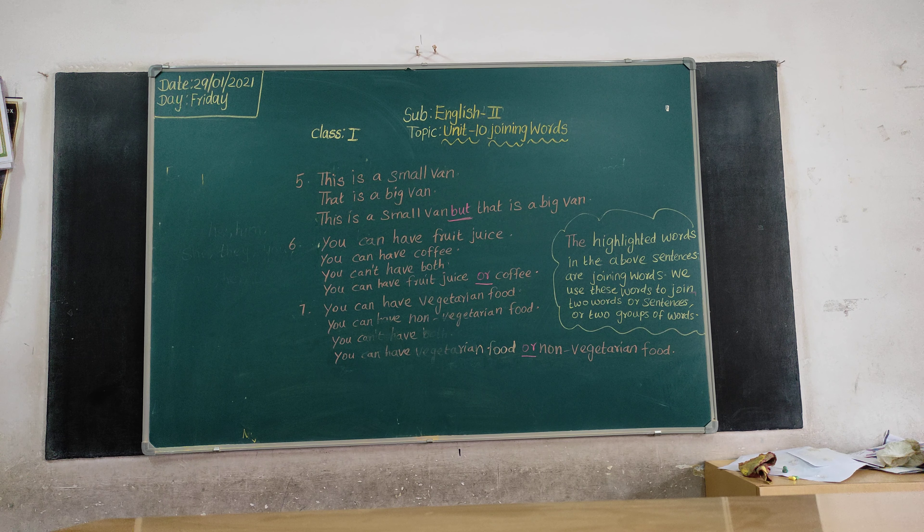You can have vegetarian food. You cannot have both. You can have vegetarian food or non-vegetarian food. So, 'or' is a joining word. This is a small one but that is a big one — so, what is a joining word?